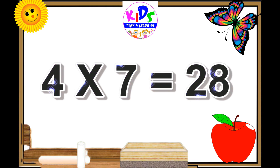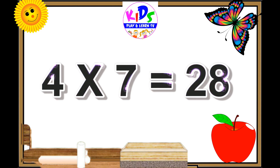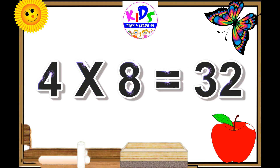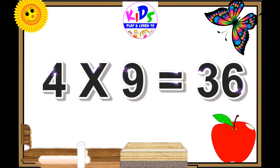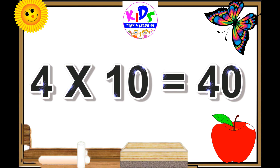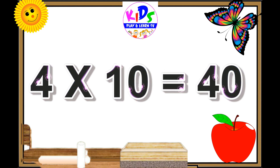Four sevens are twenty-eight, 4 8s are 32, 4 9s are 36, 4 10s are 40.